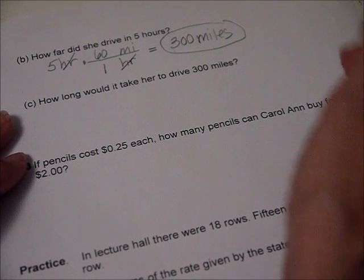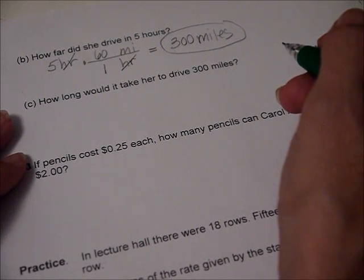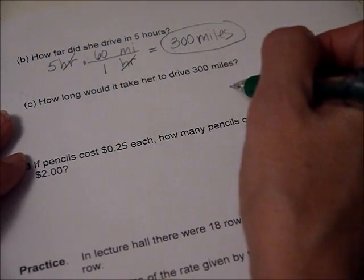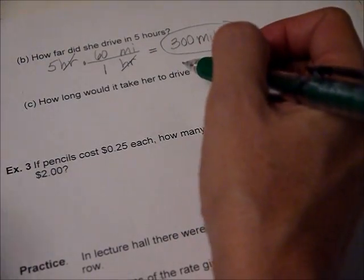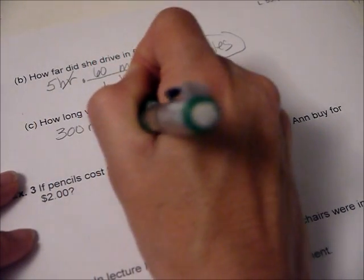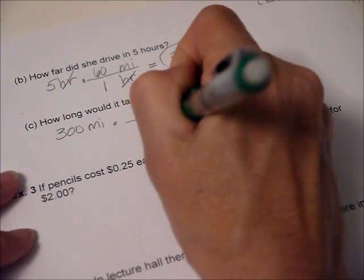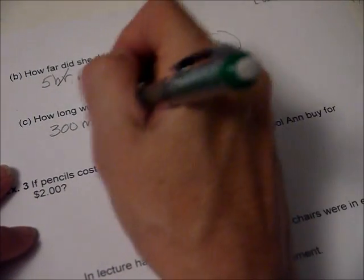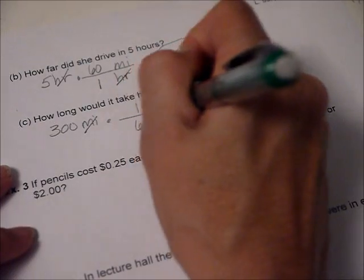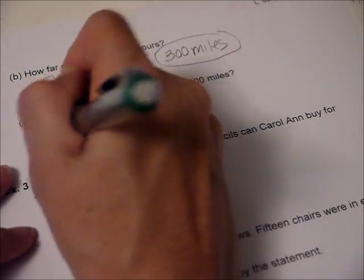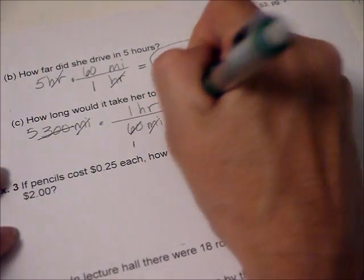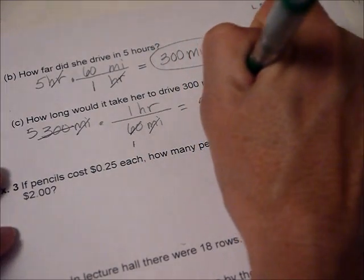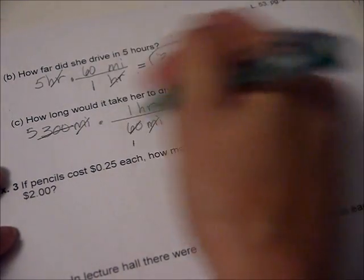How long would it take her to drive 300 miles? Well, we already answered that because it was there. I don't know why they did that, but they just want us to show how. So we got 300 miles, use the other unit where we've got 60 miles on the bottom, one hour on top. Cancel out those units. The six goes into the 300 five times. And there we go, we multiply straight across.